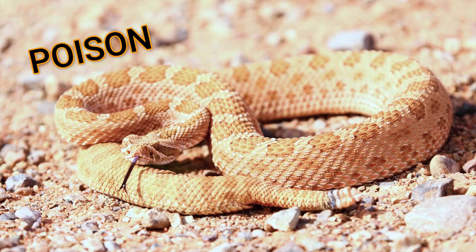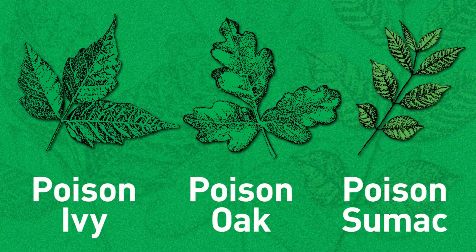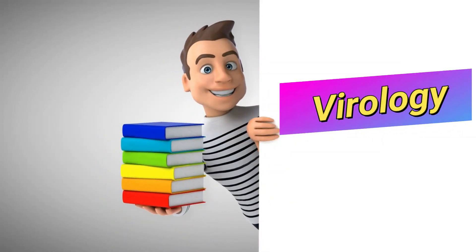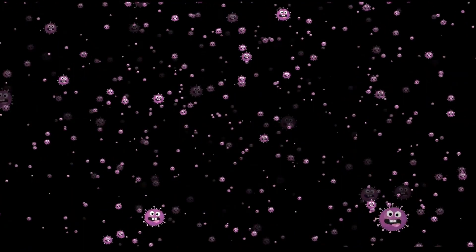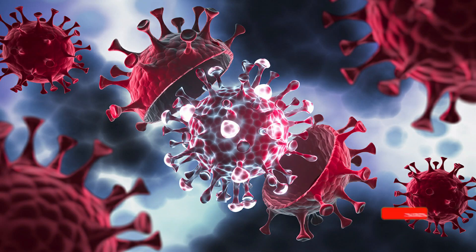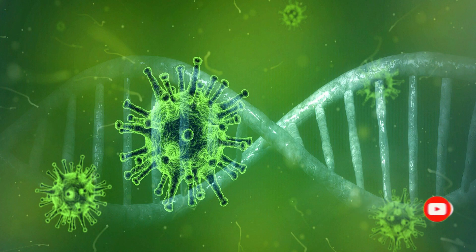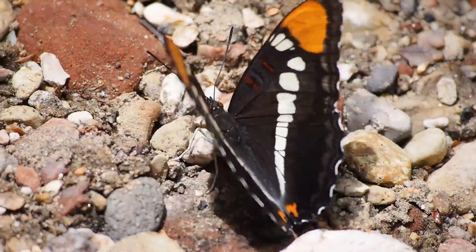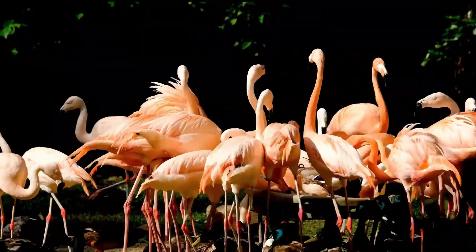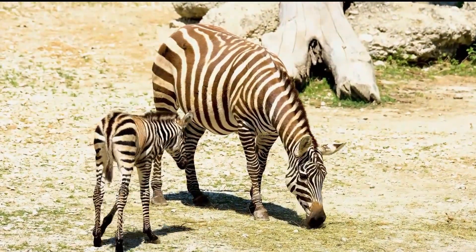The next branch is toxicology — a branch of science concerned with the nature, effects, and detection of different poisons. The next branch is virology — the scientific study of viruses and viral diseases. It involves the properties, cultivation, structure, and genetics of viruses, and also deals with the advantages and disadvantages of viruses. The next branch is zoology, which deals with the behavior, structure, physiology, classification, and distribution of animals — the scientific study of animals.